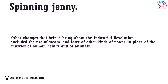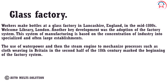Other changes that helped bring about the industrial revolution included the use of steam — and later other kinds of power — in place of human and animal muscle. Another key development was the adoption of the factory system: manufacturing concentrated in specialized, often large establishments. The use of water power and the steam engine to mechanize processes such as cloth weaving in Britain in the second half of the 18th century marked the beginning of the factory system.